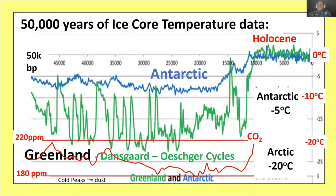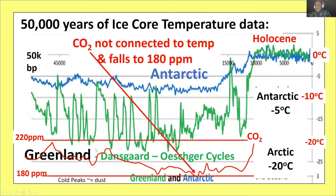Here's the ice core temperature data — Antarctic in blue, Greenland in green, and CO2 in red at the bottom. These temperature changes are 8 to 12 degrees centigrade over 10 to 100 years. Temperature increases, decreases — but not a flicker from atmospheric CO2, which doesn't even particularly match Antarctic temperatures. CO2 gets down to 180 parts per million at the glacial maximum, and the temperature swings appear independent of it.